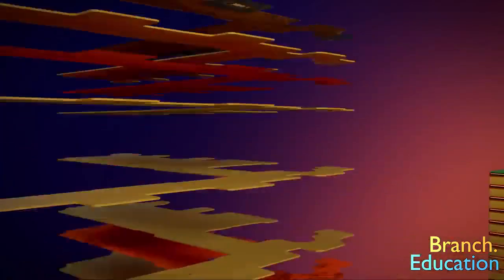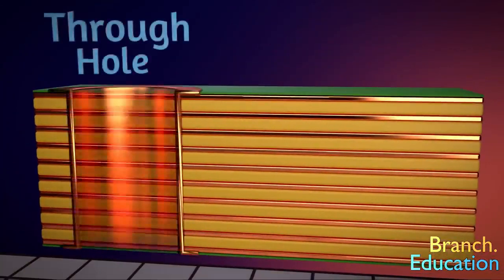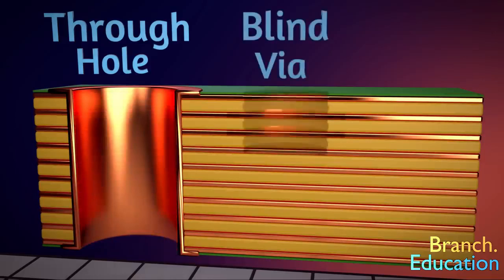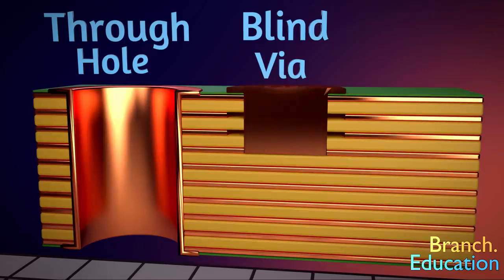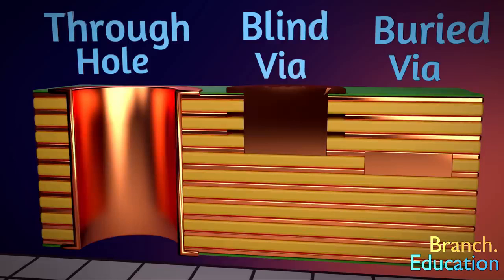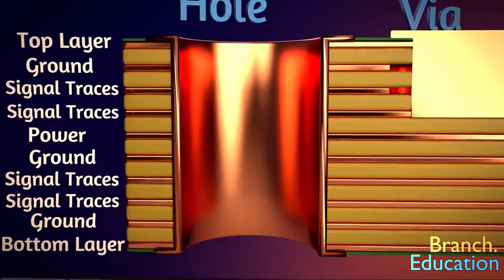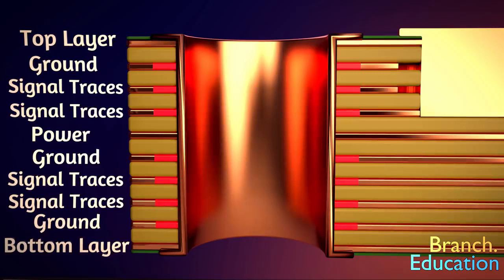There are three types of vias. Through vias are holes that go from the top to the bottom layer. Blind vias connect either the top or bottom layer to a middle layer, and buried vias connect internal layers to one another. Because vias can pass through multiple layers, when they pass through a layer that they don't want to connect to, the copper is removed from around the via on that layer.